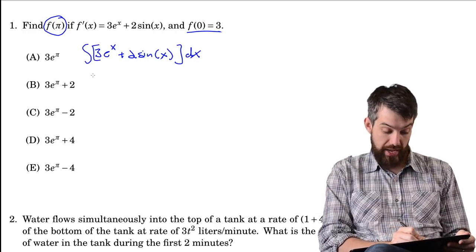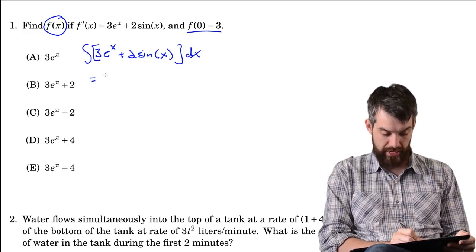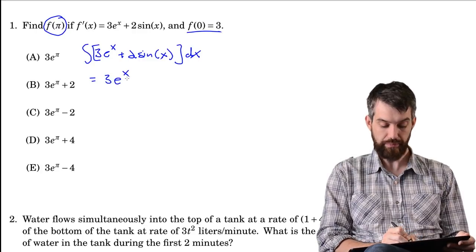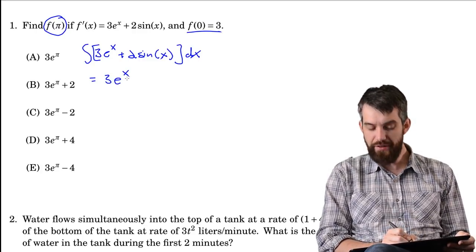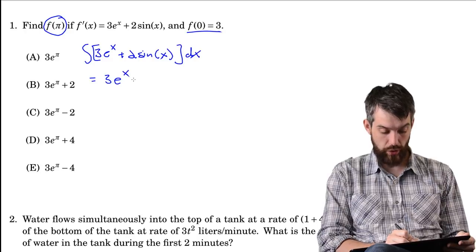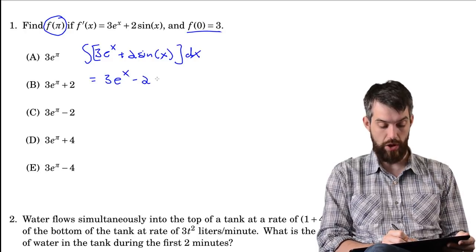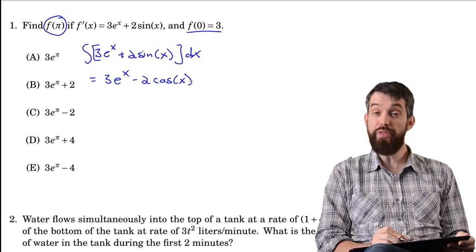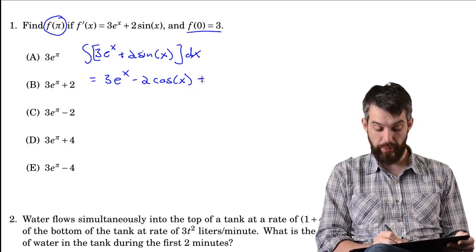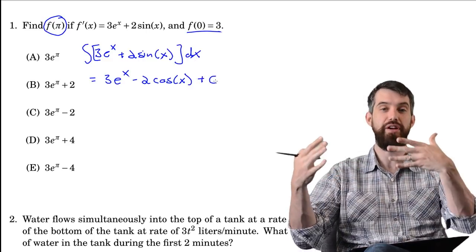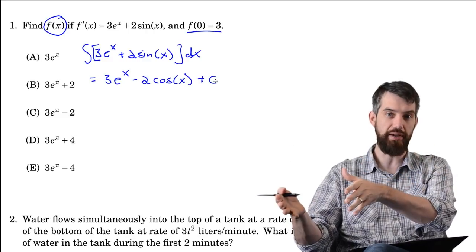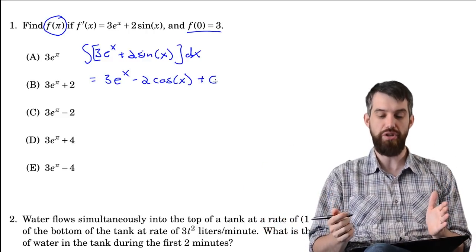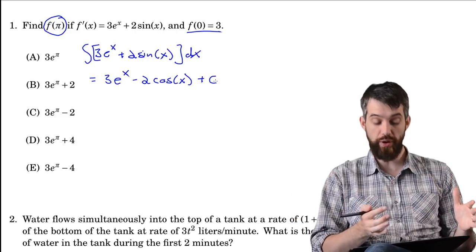This integral I can work out. The antiderivative of 3e to the x is just 3e to the x. A sine of x goes to a minus cosine, so minus 2 cosine of x. And importantly, you have to include a plus C since this is an indefinite integral. Now what is that C value? I can use the fact that f of 0 equals 3.